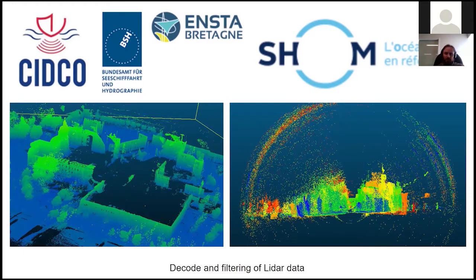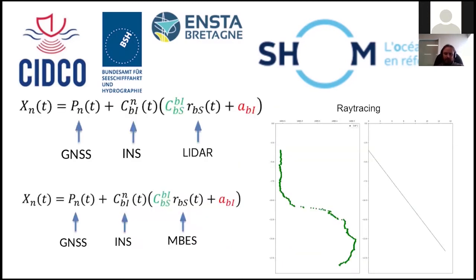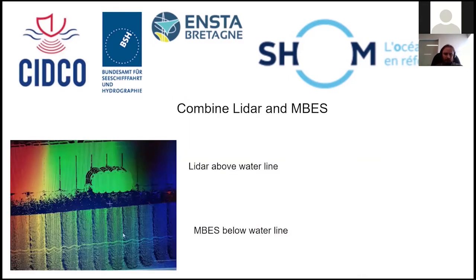For the workflows for processing LiDAR data, we have software to decode and filter the data. The same applies for multi-beam echosounders — we can decode the raw data and filter it. For both cases, we use the same geo-referencing model. The difference is that for multi-beam data, we have to perform acoustic ray tracing in the water column. Using the same model allows us to combine both datasets into a single product. Here we can see LiDAR data above the water line combined with acoustic soundings below the water line.